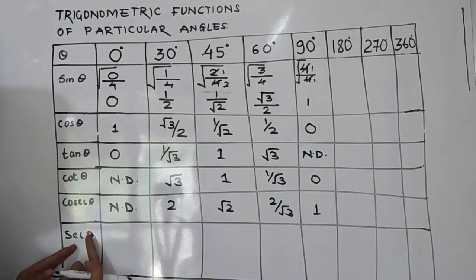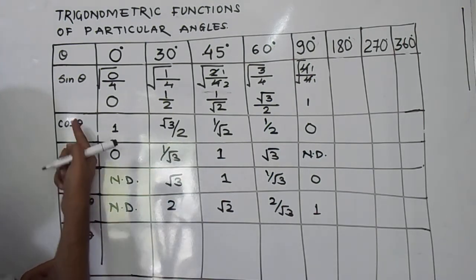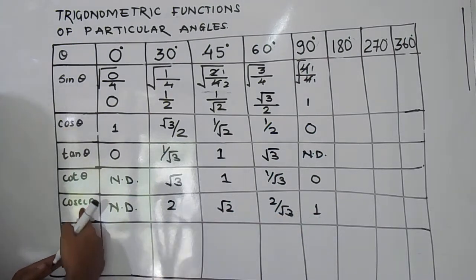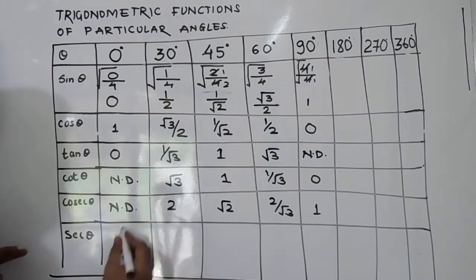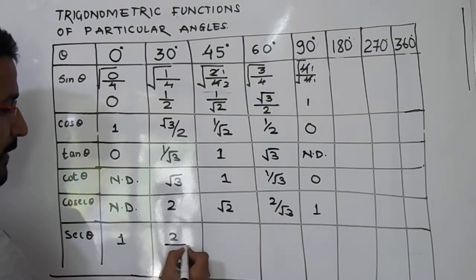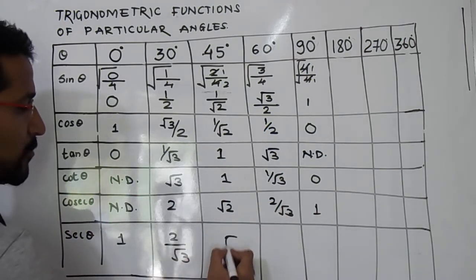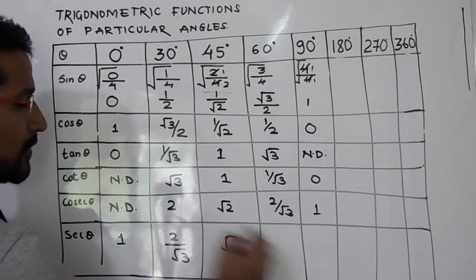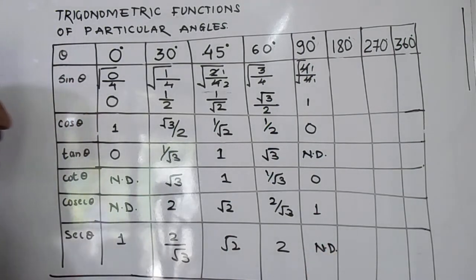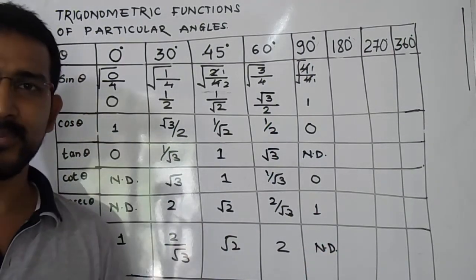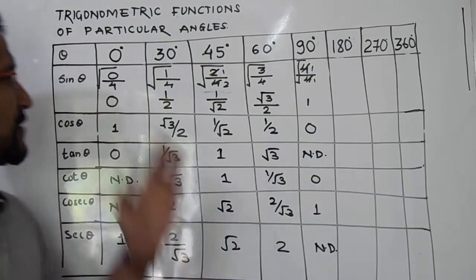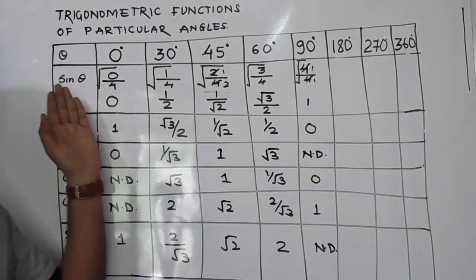Now for sec θ — sec θ is the reciprocal of cos θ, or just write the cosec values in reverse order. That gives: 1, 2/√3, √2, 2, and not defined. This is how you can complete this entire table within a few minutes if you just know the values of sin θ.